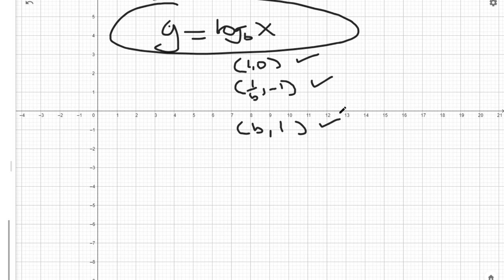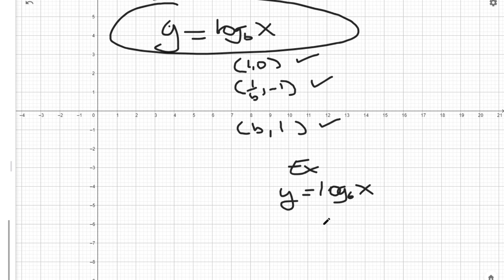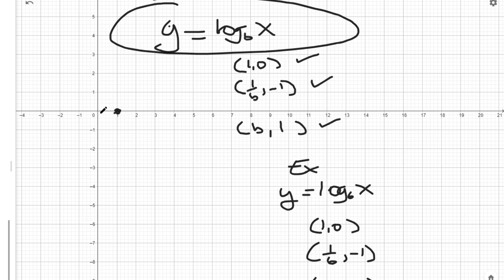Let's do one example. Let's say we have y equals log base 6 of x. I need three points: one is (1, 0), another is (1/6, -1), and the third is (6, 1). So (1, 0) is right here, (1/6, -1) is about here, and (6, 1) is over here.